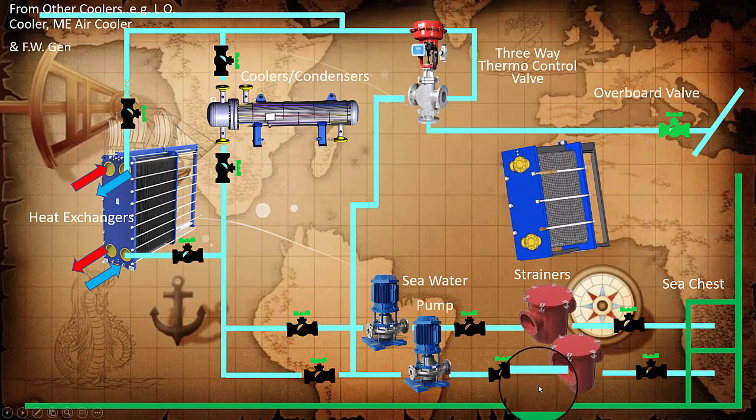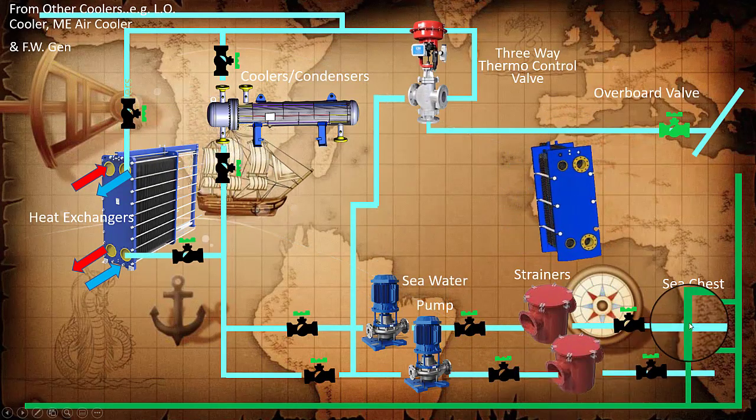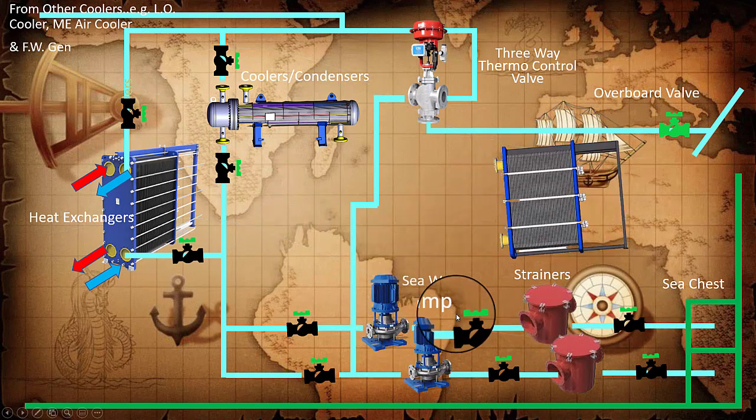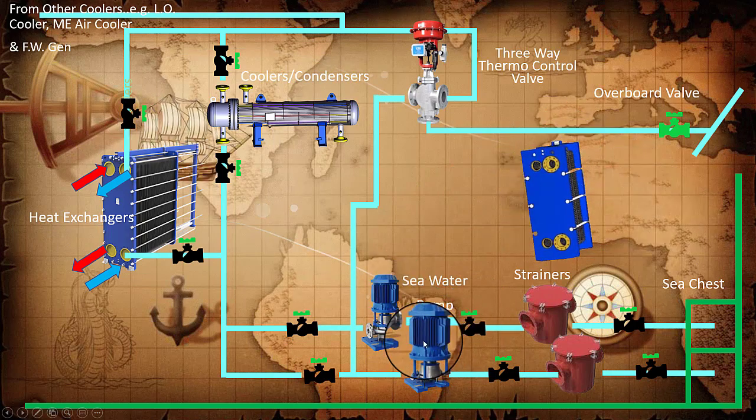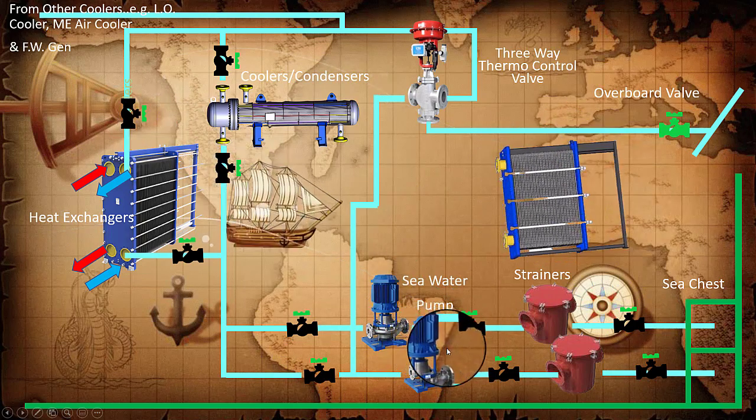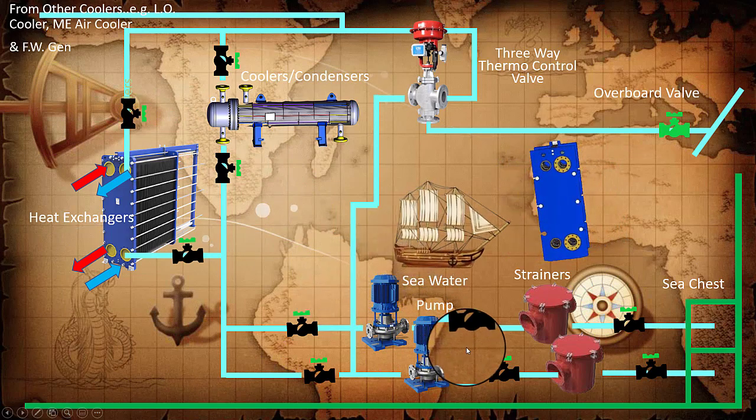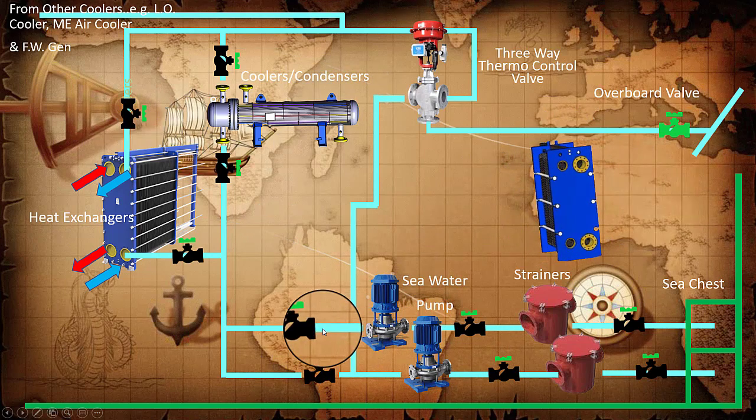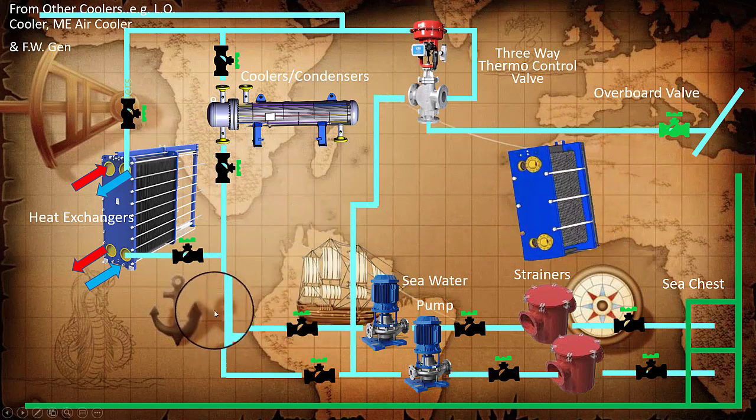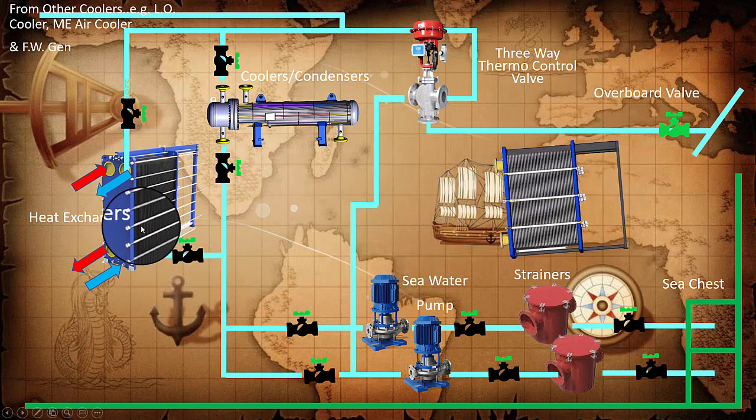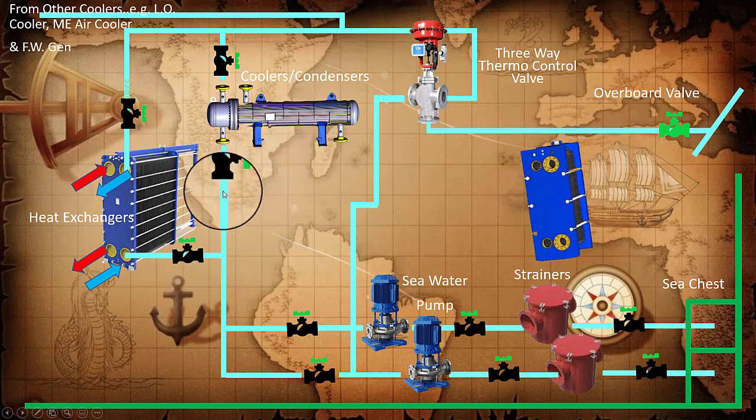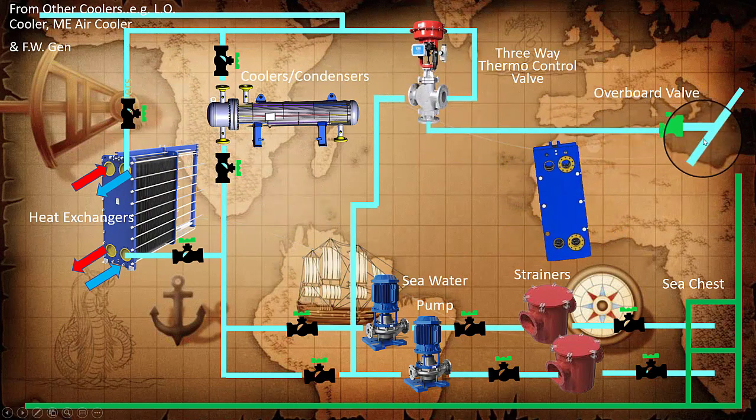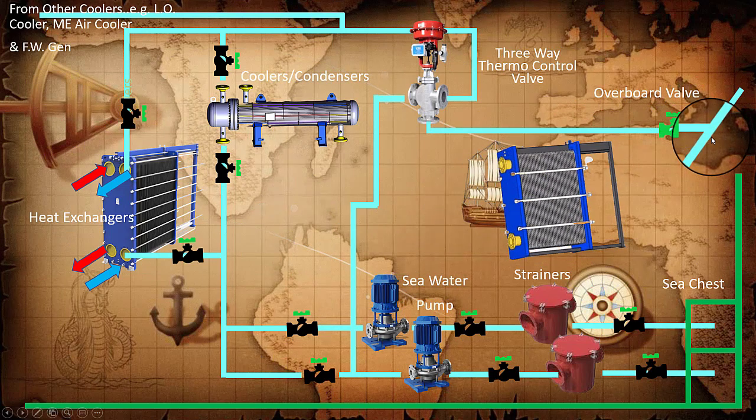The other pipes that come back are from the generator system, from the fresh water system, from the lube oil lubrication system of the main engine, and so on. This is a close-up look of your thermostatic three-way valve. It can be set with the temperatures required for the system. We have the sea chest, the strainers, and the seawater pumps. Seawater pumps can be substituted or alternately you can use the fire and general service pumps.